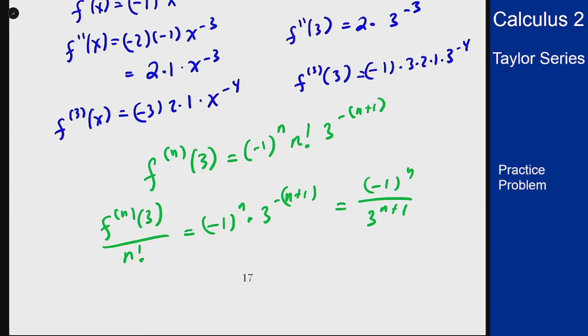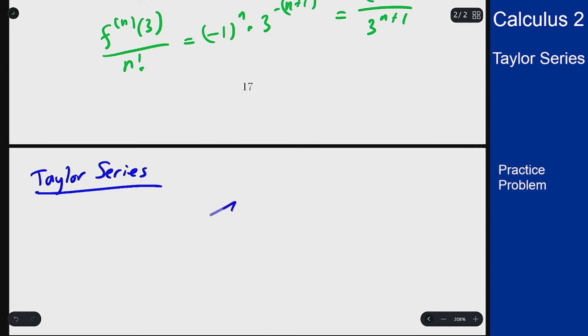This means that we can write our Taylor series now as the sum n equals 0 to infinity of negative 1 to the n over 3 to the n plus 1 times x minus 3 to the n.